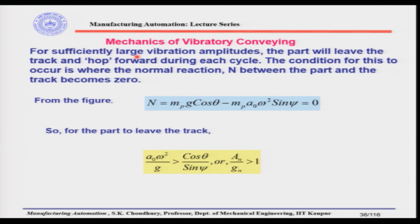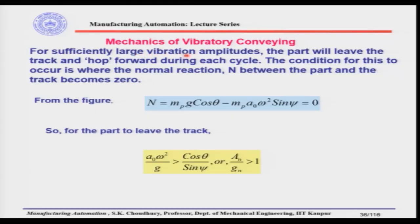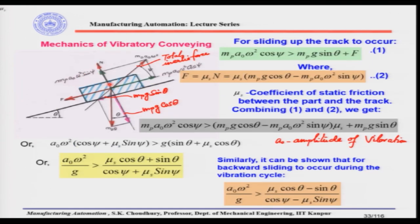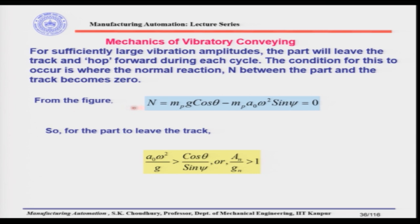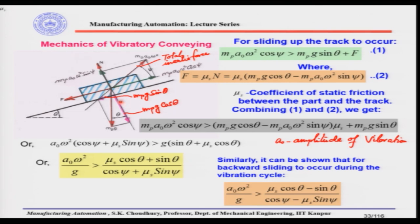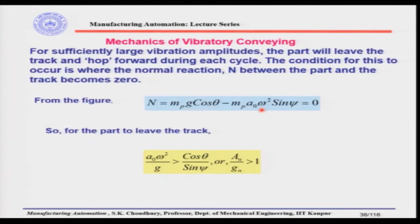For sufficiently large vibration amplitudes, the part will leave the track and hop forward during each cycle — hop like a frog. For sufficient conveying velocity, we require the part to leave the track, and for that we need large vibration amplitudes. The condition for this to occur is that the normal force N must equal zero. This is the limiting condition: when N equals zero the part is ready to leave the track. From the figure, N equals MP·g·cos(θ) minus MP·A0·omega²·sin(ψ).